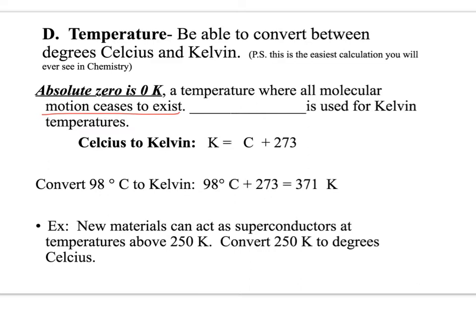We talked about that in chapter one where we talked about how all particles have some sort of motion. Solids are vibrating in place, liquids can slide past one another, and gases can move freely. But at zero Kelvin, all particles cease to exist. And when we're writing the Kelvin temperature, we do not use a degree sign. It's just K.